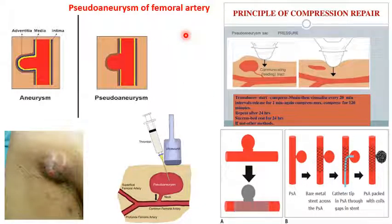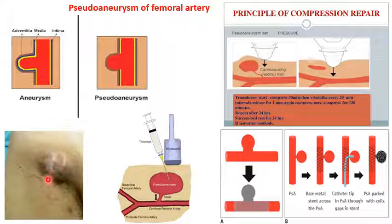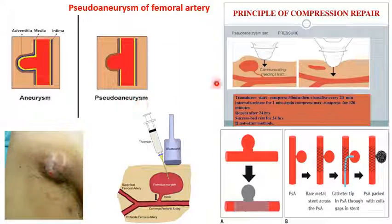Another condition is pseudoaneurysm of the femoral artery. A true aneurysm involves bulging of all walls of the femoral artery, whereas in a pseudoaneurysm only the adventitia is bulged — the media and intima do not extend into the bulge. In the groin region a bulge of the artery is visible, sometimes with a small amount of ooze. Since not all walls of the artery are involved, it is called a pseudoaneurysm — pseudo meaning false. It can be treated by compression under ultrasound guidance over several sittings to obliterate the feeding tract.